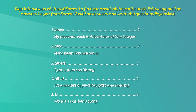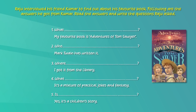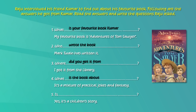The first answer given is 'My favorite book is Adventures of Tom Sawyer.' The question to this should be: 'What is your favorite book, Kumar?' The second answer is 'Mark Twain has written it.' The question: 'Who wrote the book?' The third answer is 'I got it from the library.' The question: 'Where did you get it from?' The fourth answer is 'It's a children's story.' The question: 'Is it a children's story?'